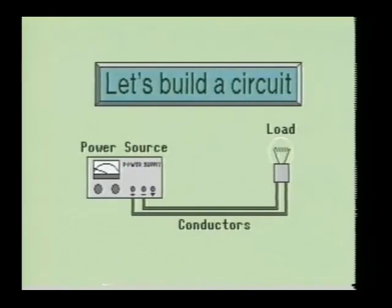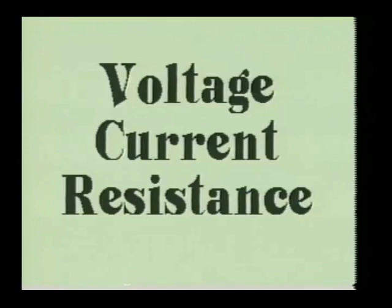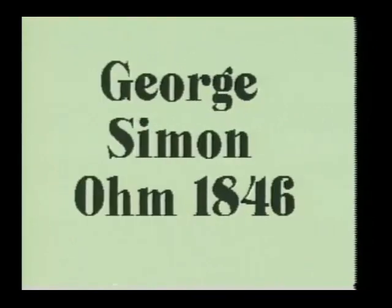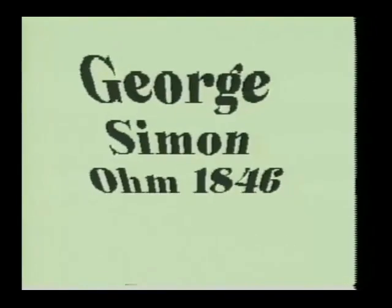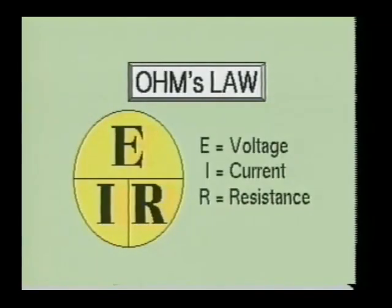Now that we've seen what it takes to make a functioning circuit, let's find out what voltage, current, and resistance are and see how they relate to one another. A mathematical relationship between voltage, current, and resistance was found to exist by George Simon Ohm in 1846. This relationship was a most important discovery in electricity, and it was named Ohm's Law in his honor. The equation for Ohm's Law is voltage over current times resistance, or simply stated, E over I times R. E represents the voltage, I represents the current, and R represents the resistance. By knowing any two of these three variables, the third can be calculated very easily.